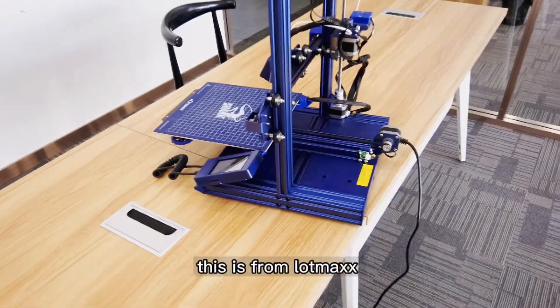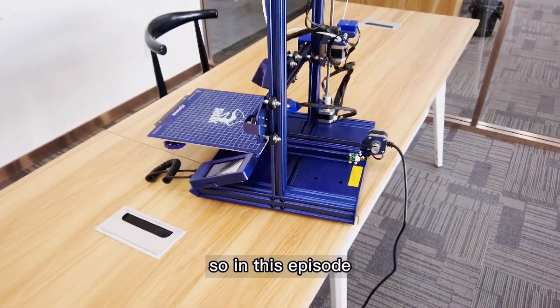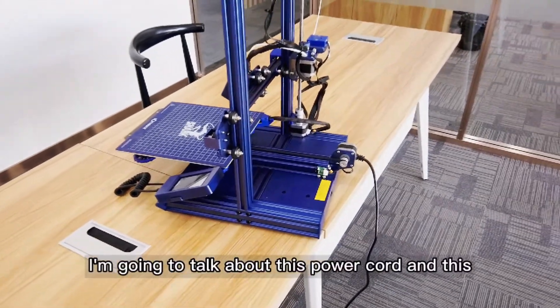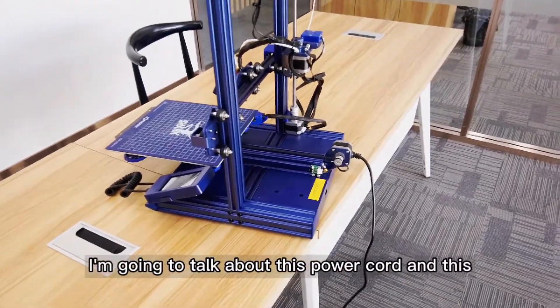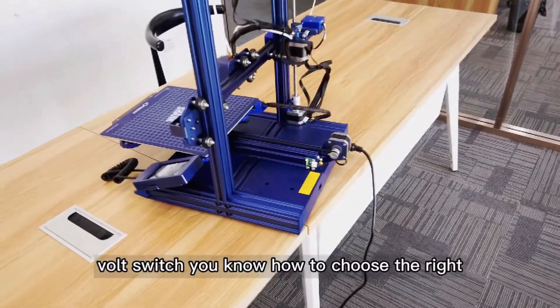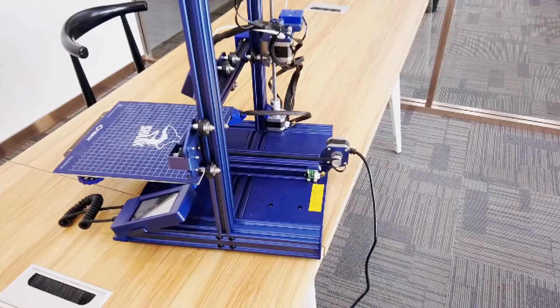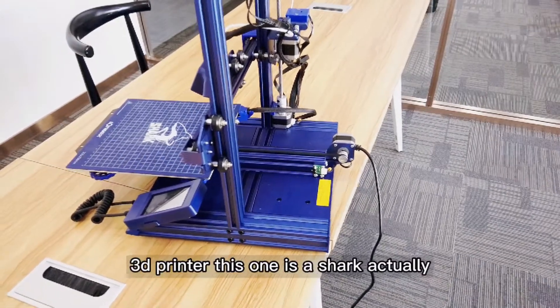What's up guys, this is from Lomax. In this tutorial episode, I'm going to talk about this power cord and this volt switch—how to choose the right volt for your 3D printer. This one is a shark, actually.